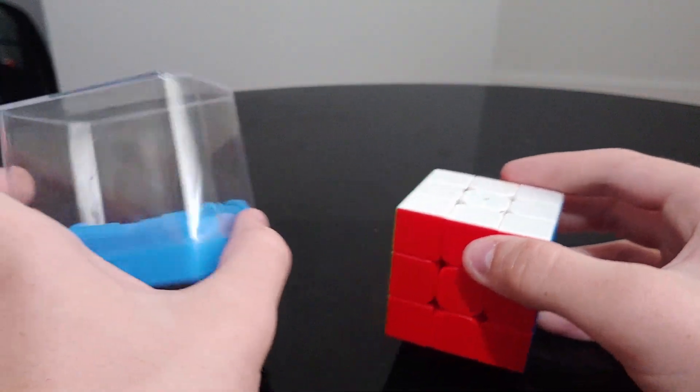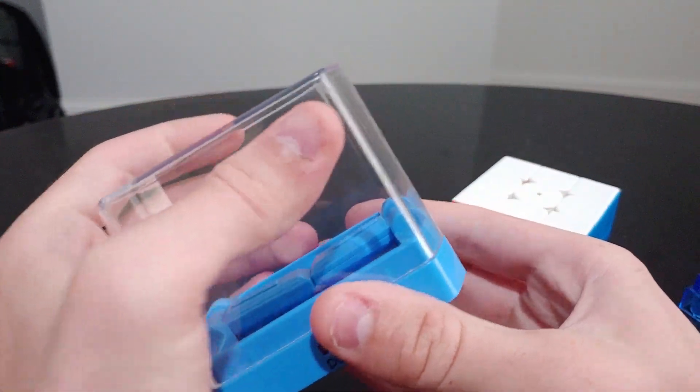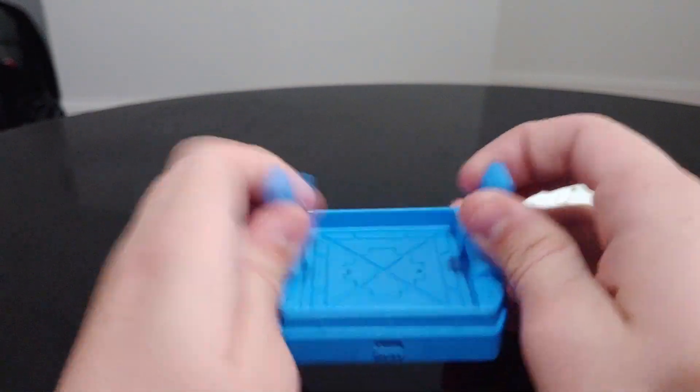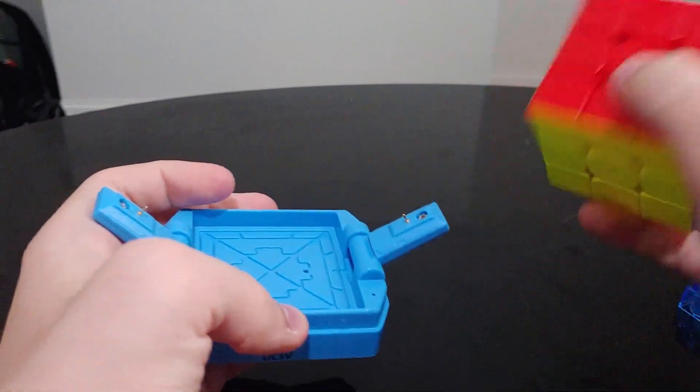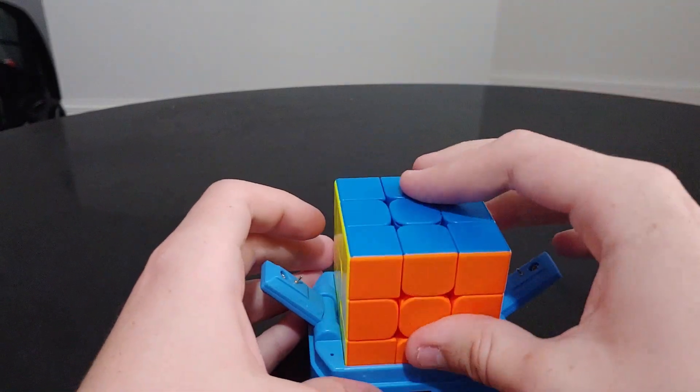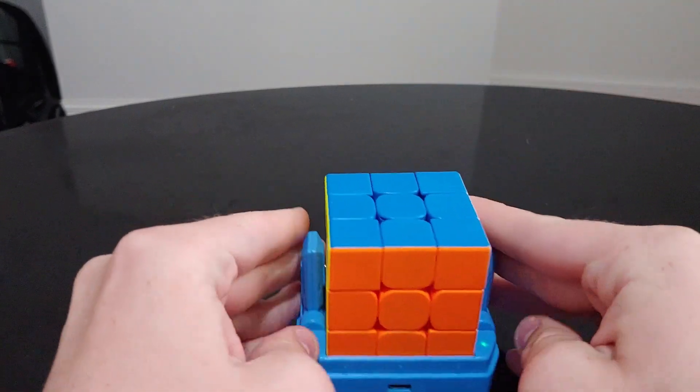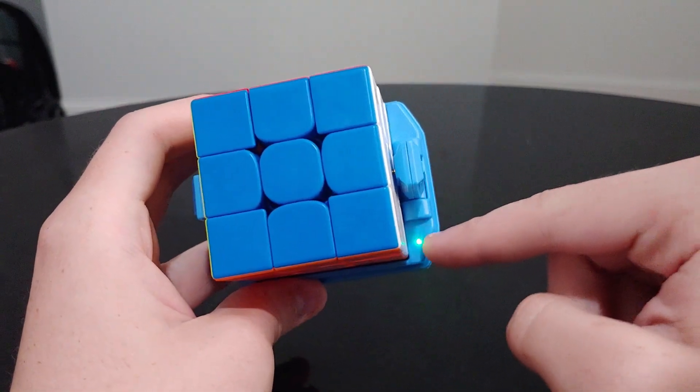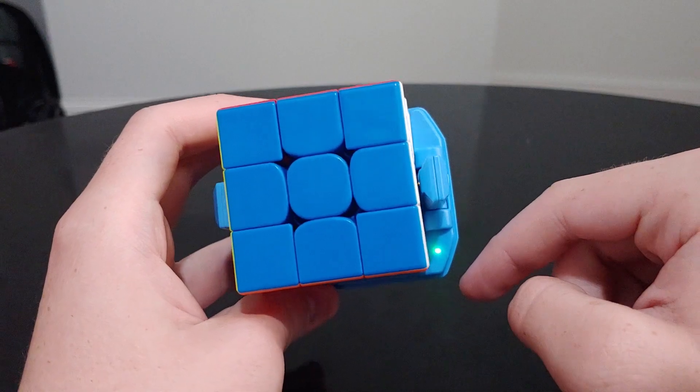Next, I'm going to talk about the charging case, which is probably the most complicated part of this puzzle. It has these two arms that separate, and then you can put the cube in to charge it. But there are a lot of things you need to know about this case. First of all, it has this light here, which seems to indicate that the cube is charging, but it's actually not.